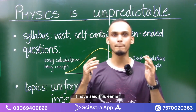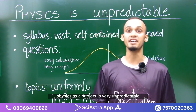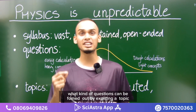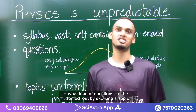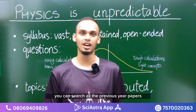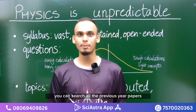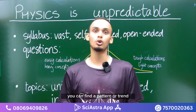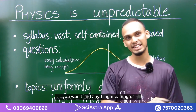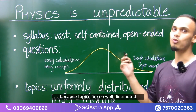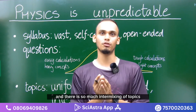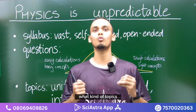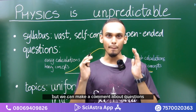Physics as a subject is very unpredictable. Your syllabus is so vast that which topic can appear is hard to predict. You can take question papers from previous years, divide them into topics, and try to find a pattern or trend — but you won't find anything meaningful because topics are so well distributed and there is so much intermixing.